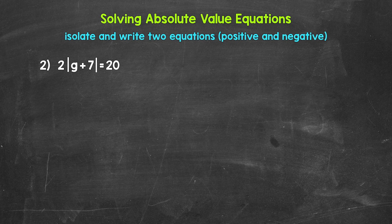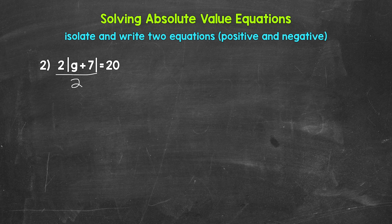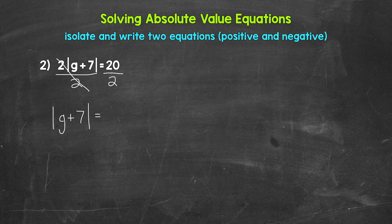For number 2, we have 2 times the absolute value of g plus 7 equals 20. The first thing we need to do when solving an absolute value equation is to isolate the absolute value — get it by itself on one side of the equation. We are multiplying the absolute value by 2, so we need to undo that. The inverse operation of multiplication is division. So let's divide both sides by 2. These 2s cancel each other out, giving us the absolute value of g plus 7 equals 20 divided by 2, which is 10.